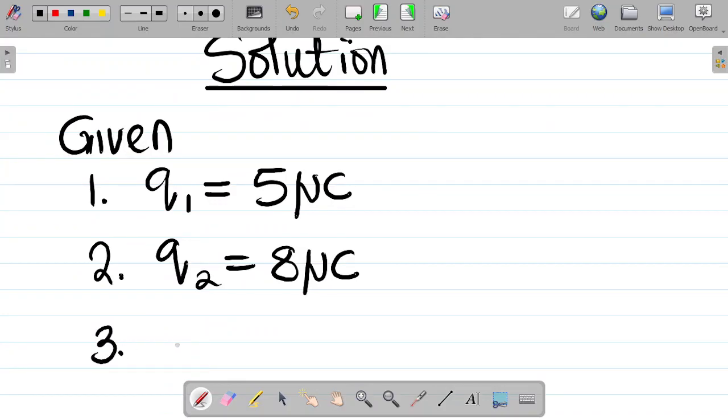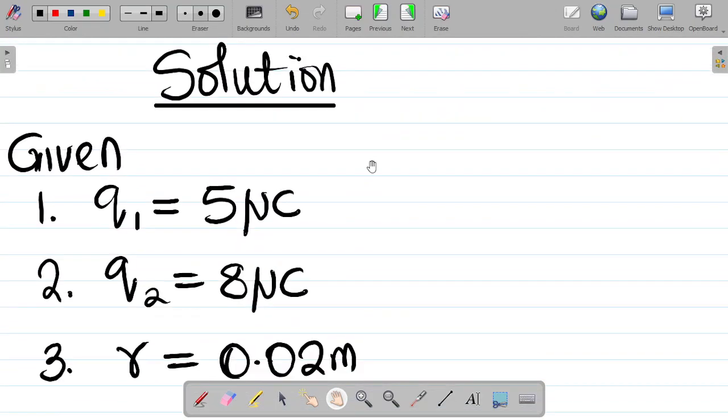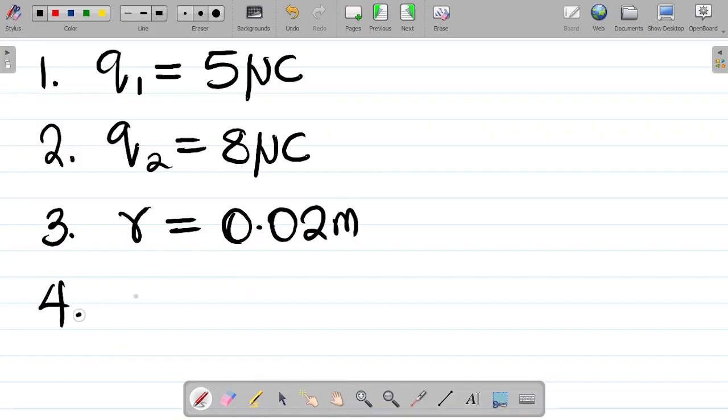the distance, let's call it R, is equal to 0.02 meters. We are asked to find the force of repulsion. So let's call that F, number 4. The force of repulsion, F, is equal to unknown.